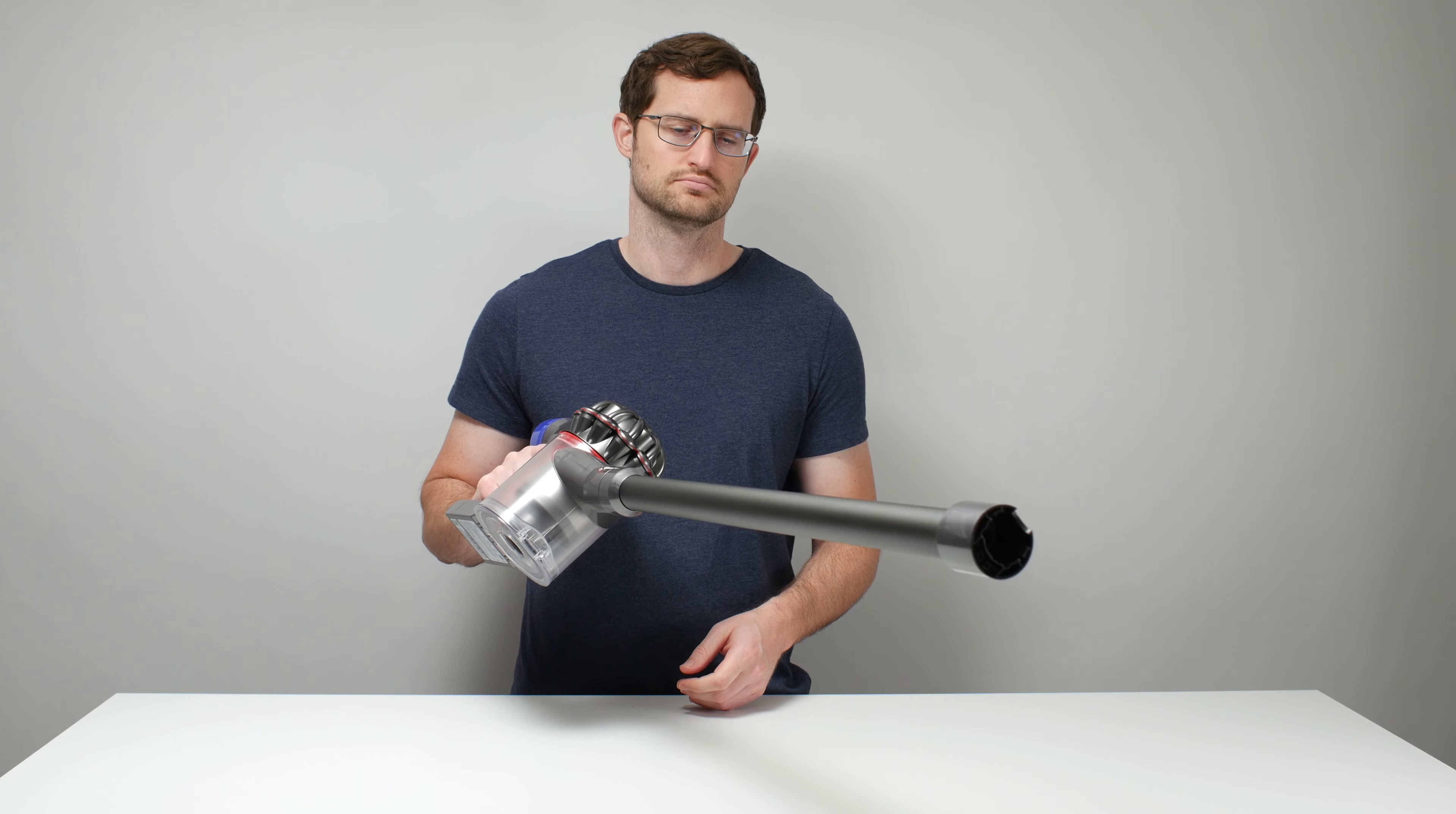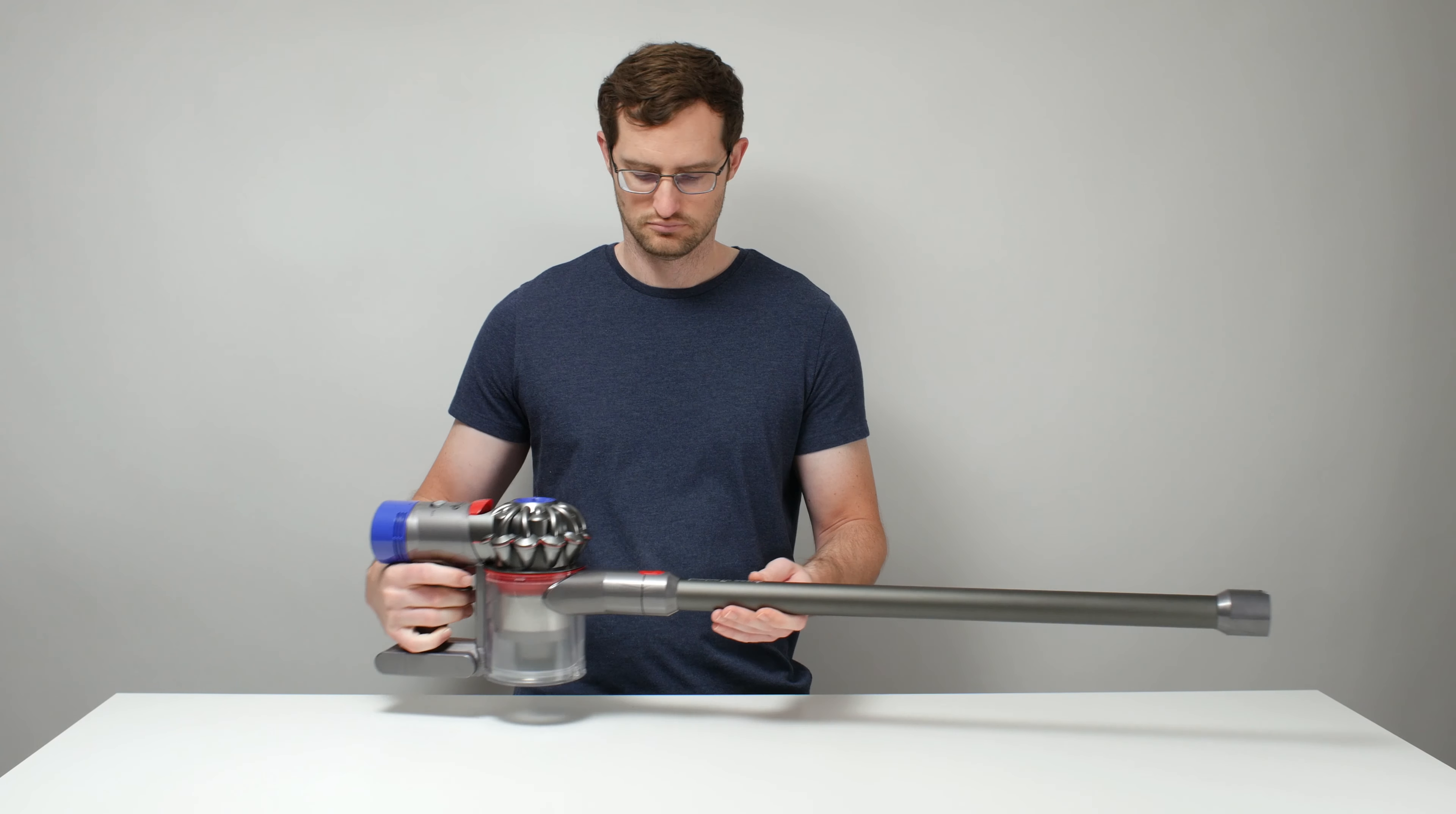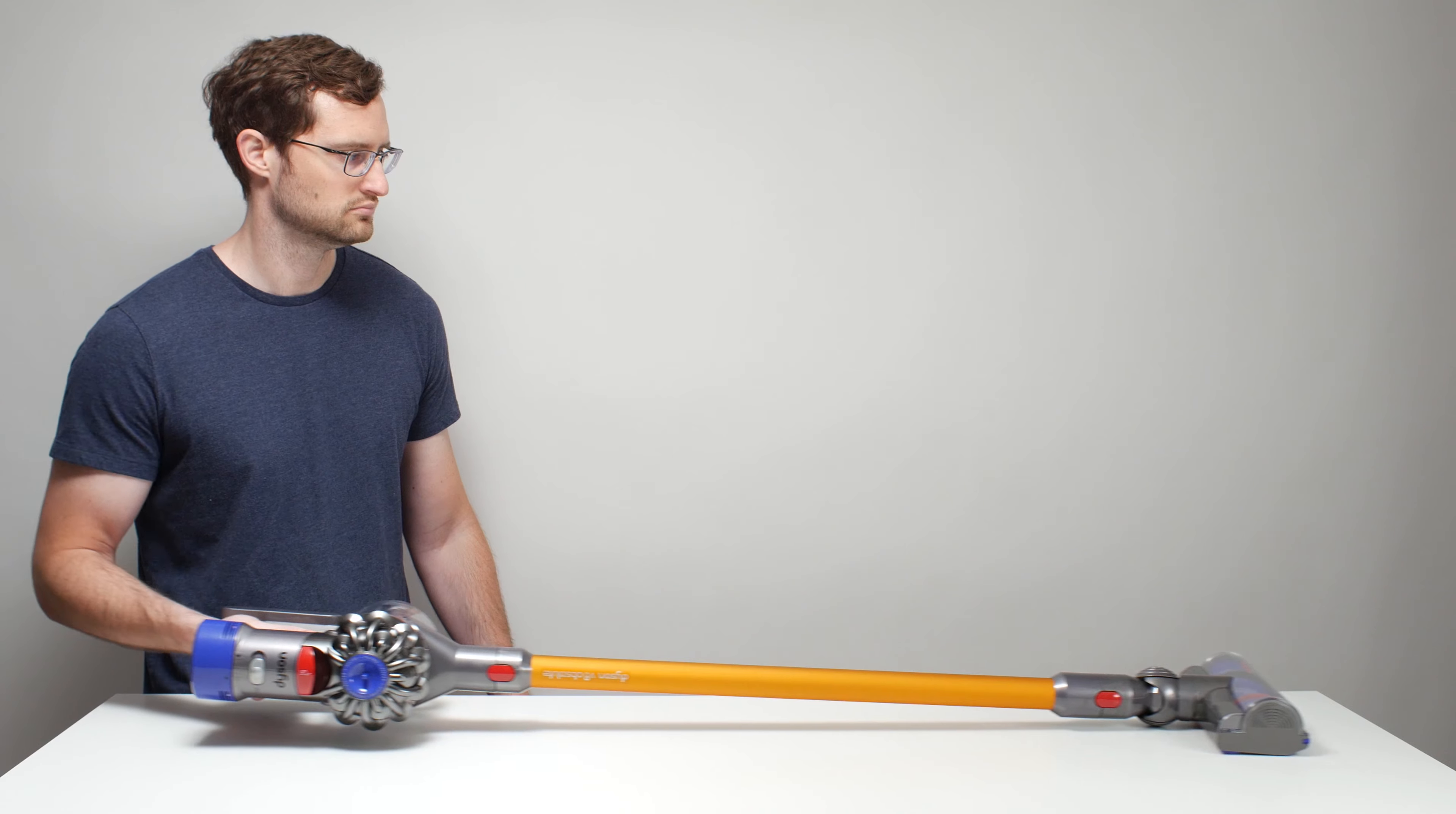The problem with these apparent advantages is that they already exist with other cordless vacuums in a much more compact form and without requiring the extra step of removing the main body away from the vacuum. The P50 in lift-away mode can get as low as 7 inches above ground level. Dyson's can get as low as 5 inches above ground level without needing to take anything apart.